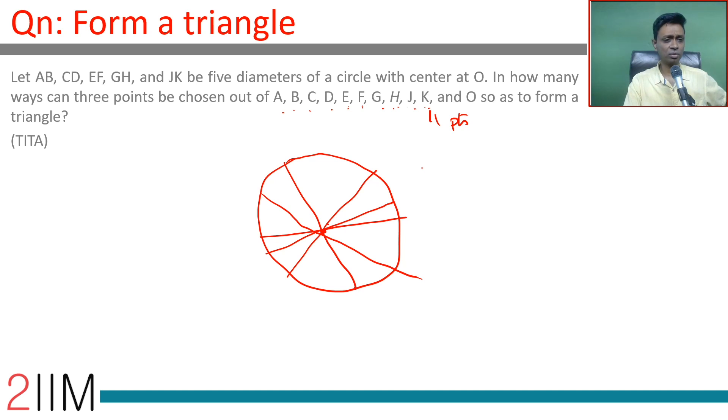We're basically saying from these 11, how can you select three points that are not collinear? I'm going to break this down. Out of these 10 points on the circle, you select any three—they'll be non-collinear. Any three points on a circle are not collinear.